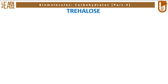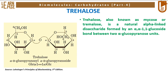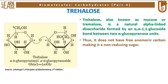Let me show you the structure of another non-reducing sugar, trehalose. The image on the left represents the structure of trehalose. The disaccharide possesses two alpha-glucopyranose residues linked by an alpha-1,1 linkage. This structure is traditionally named as O-alpha-D-glucopyranosyl-(1→1)-alpha-D-glucopyranose. Trehalose, also known as mycose or tremolose, is a natural alpha-linked disaccharide formed by an alpha-alpha-1,1-glucoside bond between two alpha-glucopyranose units. Thus it does not have a free anomeric carbon, making it a non-reducing sugar.